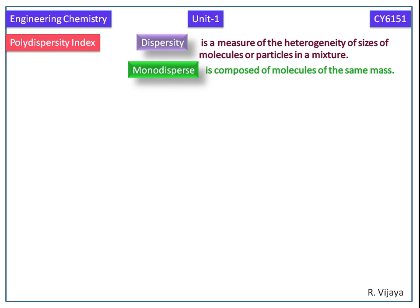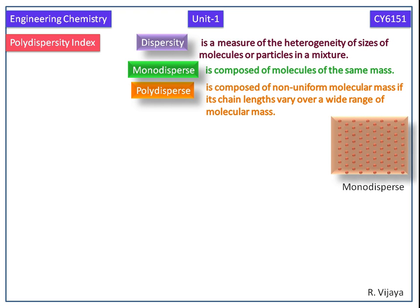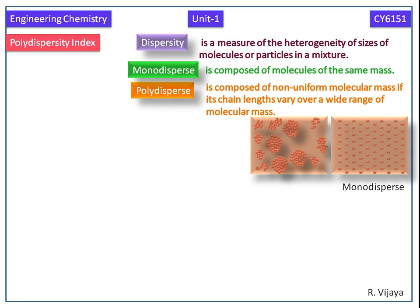Monodispersity is composed of molecules of the same mass. Here we can see similar molecules in the polymers, since these polymers have monodispersity. Polydispersity is composed of non-uniform molecular mass if its chain lengths vary over a wide range of molecular mass. Here you can see how the molecular masses are different in this polymer.